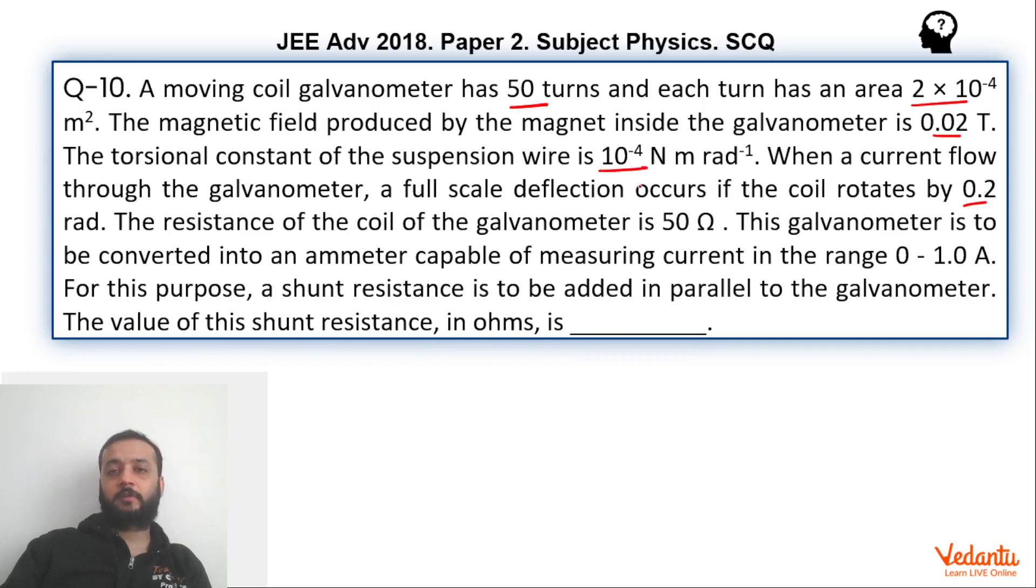The torsional constant of the wire is also given, 10⁻⁴ newton meter per radian. The resistance of the galvanometer has been given. Now, we need to convert this galvanometer into an ammeter whose range must be 0 to 1 ampere. So we have to find the shunt resistance that must be attached with this galvanometer.